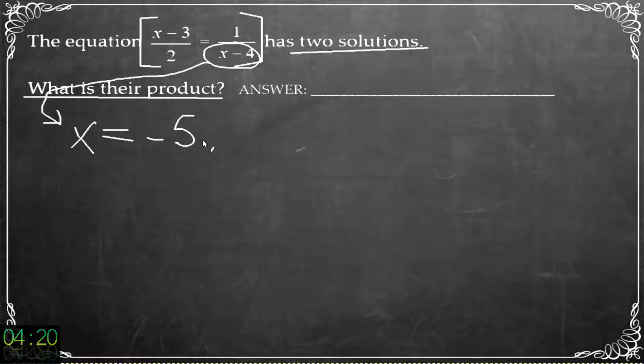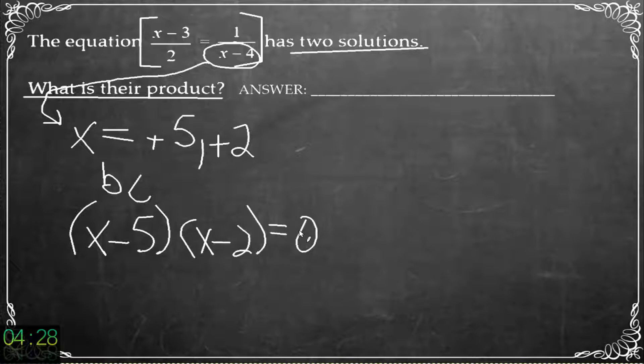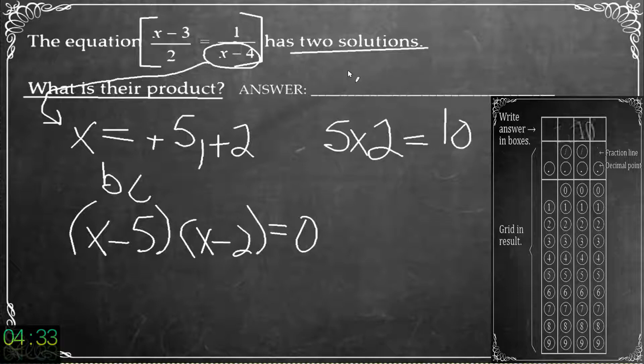So x should equal well not negative 5 positive 5 and a positive 2 because of course if x minus 5 times x minus 2 is equal to 0 that's what will make it equal to 0. So what's the product? 5 times 2 is 10.